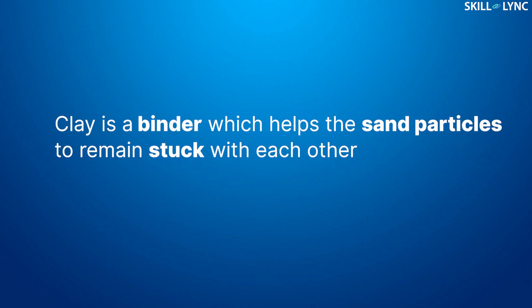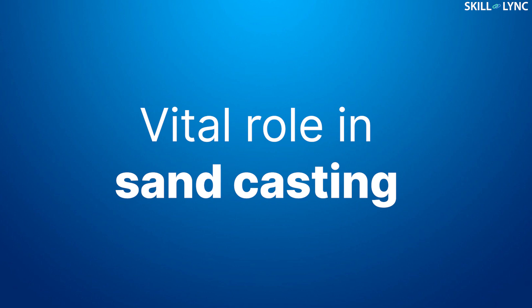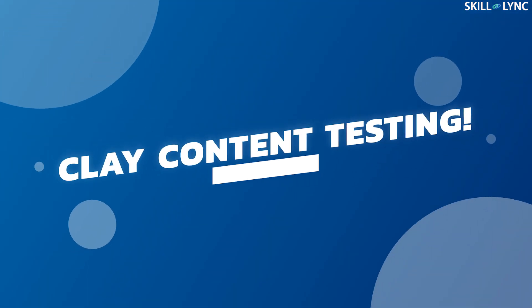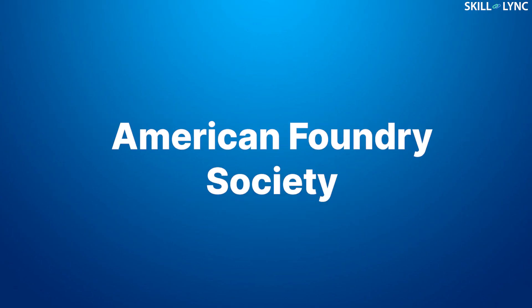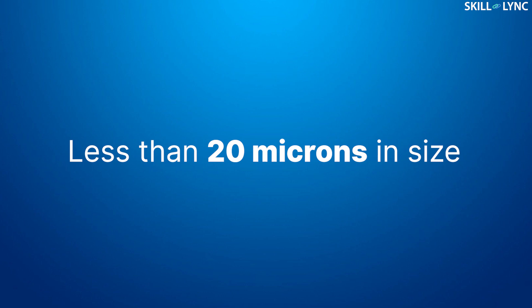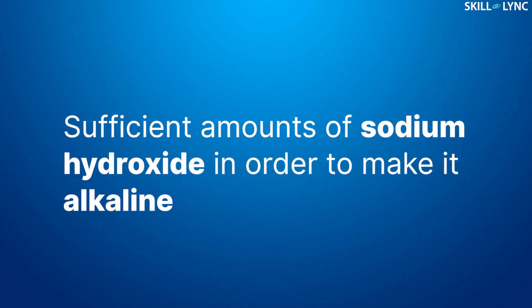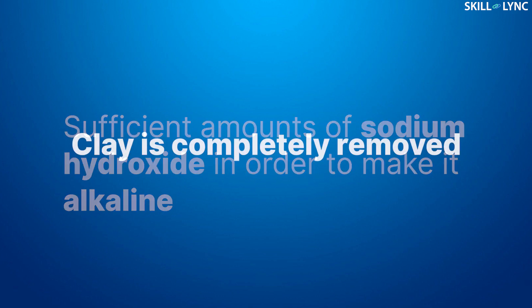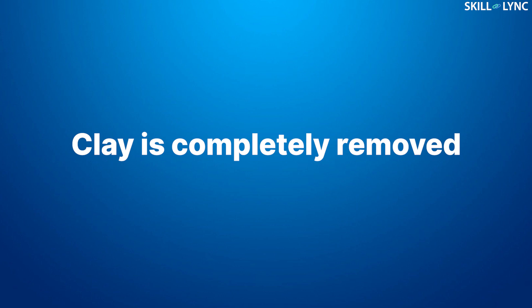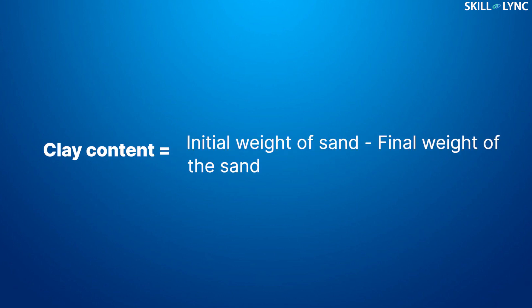Clay is a binder which helps the sand particles remain stuck with each other, so clay content plays a vital role in sand casting. According to the American Foundry Society, AFS clay is the percentage of particles having a diameter of 20 microns or less in a foundry sand sample. To determine clay content, a 50 gram sample of molding sand is washed in water containing sufficient sodium hydroxide to make it alkaline, so the clay content will easily wash away. Once the clay is completely removed, the sand is weighed, and the difference between the initial and final weight gives the clay content.